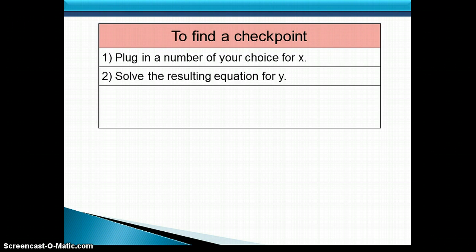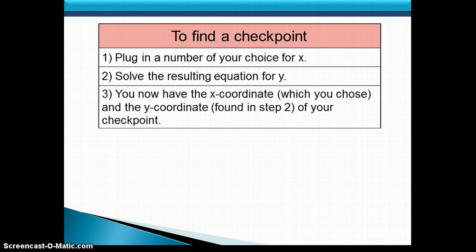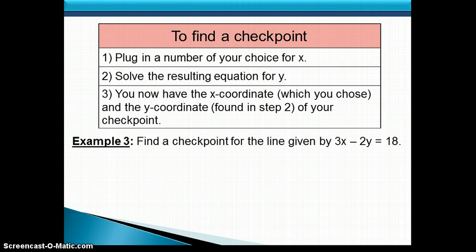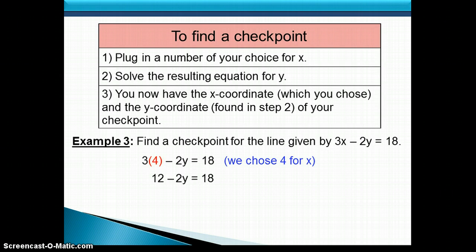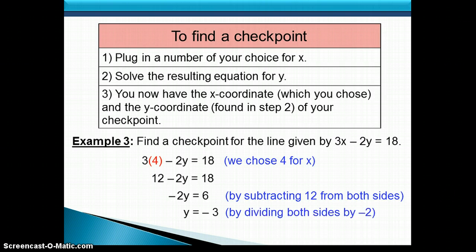We plug in some other number for x and solve the equation for y. That gives us an x-coordinate we chose and a y-coordinate we find. Looking back at the same equation, let's pick 4 to plug in for x. Replacing x with 4, we simplify to get 12 minus 2y equals 18. Subtracting 12 from both sides gives negative 2y equals 6. Dividing both sides by negative 2 gives y equals negative 3. So our checkpoint is the point (4, negative 3).